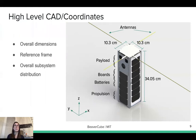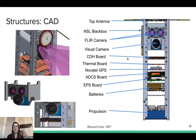For taking pictures, we'll have the cameras pointing to Earth, and to downlink we'll have the z-axis pointing in the nadir direction. Inside the structure, on the top we have the payload with the cameras. In the middle we have all the boards comprising the command and data handling boards, thermal boards, GPS, attitude, and power boards. We also have the batteries, and on the bottom we have the propulsion unit.